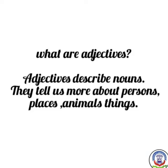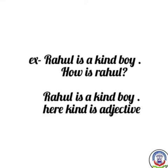Adjectives describe nouns. They tell us more about persons, places, animals or things. Example: Rahul is a kind boy. How is Rahul? Rahul kaisa hai? Rahul is a kind boy — Rahul dayaalu ladka hai. Here, 'kind' is the adjective. Jo words kaisa batayin, use adjective kehte hain.